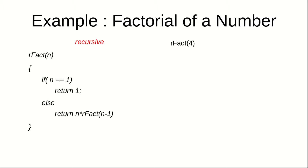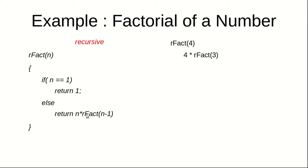Suppose we are calling rfact with an argument of 4. There are two cases: when n equals 1 we return 1, otherwise we return n into rfact(n minus 1). Since n is 4, we go to the latter case and return 4 into rfact(3). Now rfact(3) is itself a function call, so its result is pushed onto the stack, and the same function is called again with argument 3, which returns 3 into rfact(2).